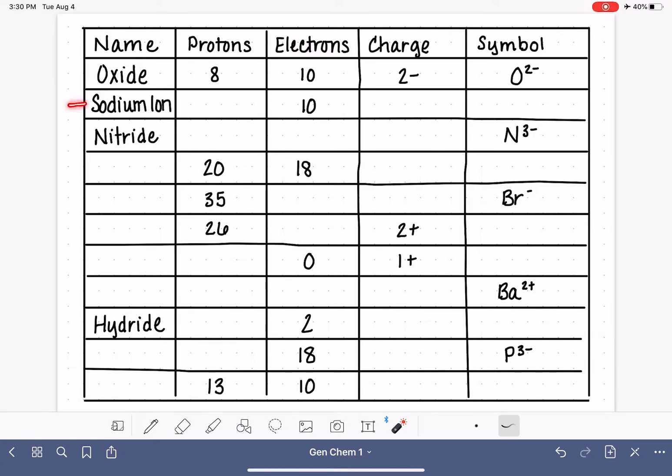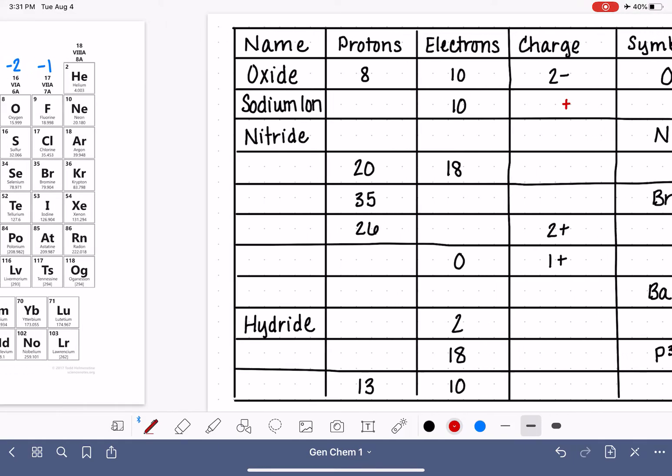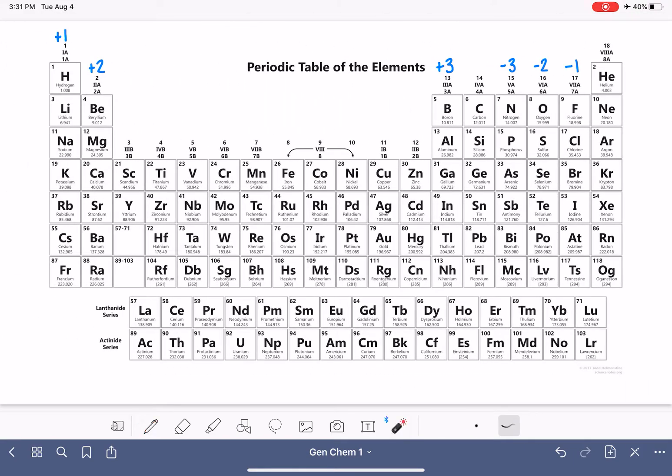For the first one, the first row that actually needs us to put information in, we are working with the sodium ion. Because it's called the sodium ion, we know that it is going to be a positively charged ion of some sort. To determine the number of protons in a sodium ion, we need to go to the periodic table and find the sodium atom.